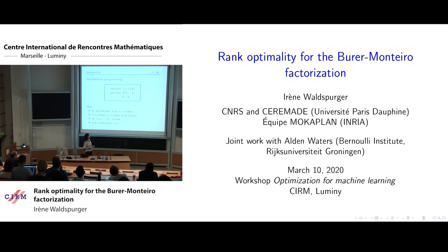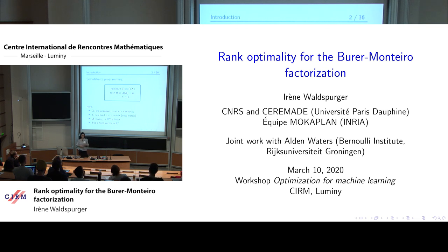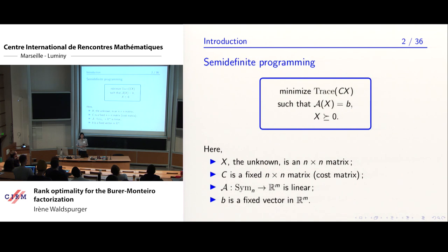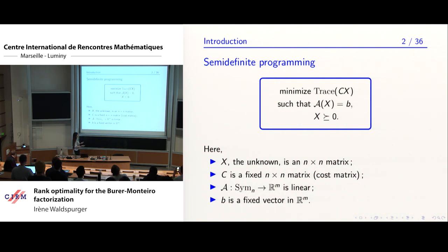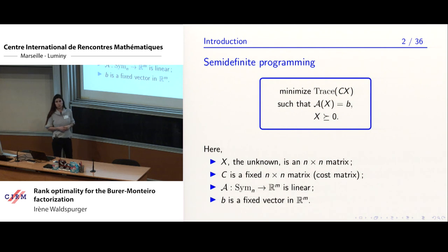This talk is about semidefinite programs. Consider a general semidefinite program: we have an unknown matrix X, and we want to minimize the trace of CX for some fixed, known cost matrix C, subject to two types of constraints. X must satisfy M affine constraints represented by A(X) = B, where A is a linear operator with range in R^M, and also X must be semidefinite positive.